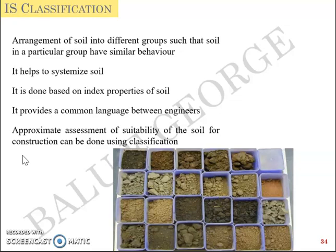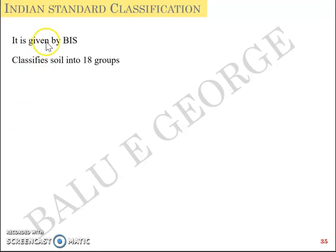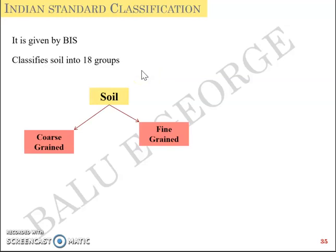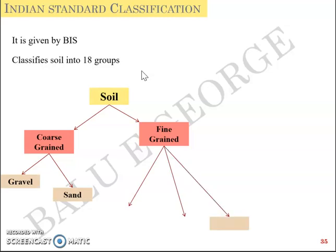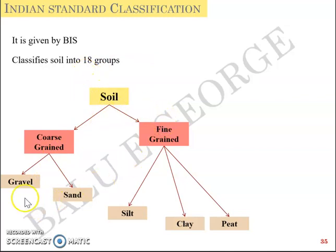Though there are different organizations that give out different sets of classifications, the one we follow in India is based on the Bureau of Indian Standards (BIS), called Indian Standard Classification. Based on this, soil is grouped into 18 groups. Soil in general can be coarse-grained or fine-grained. Coarse-grained soil can be gravel or sand; fine-grained soil can be silt, clay, or peat. The primary symbols used are: G for gravel, S for sand, C for clay, M for silt.